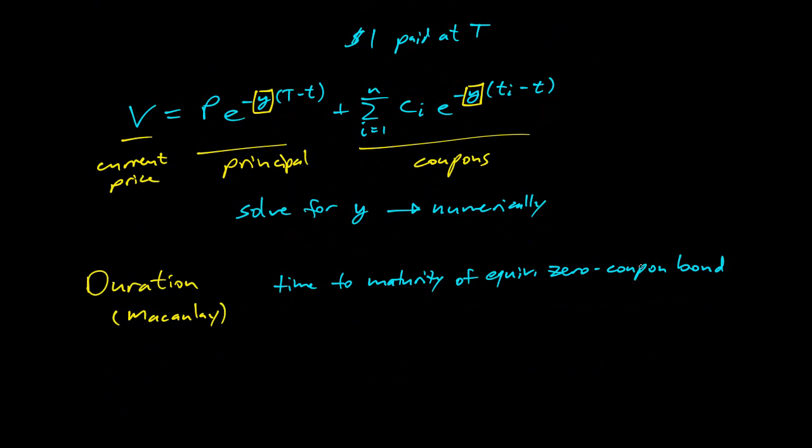The definition of the Macaulay duration is it's the time to maturity of the equivalent zero coupon bond. So for a zero coupon bond, the duration is just the actual time to maturity. For a coupon bond, we have to do a little bit of calculation. So let's see how that'll work.